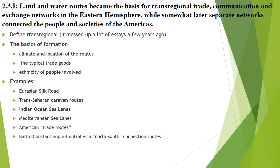The first thing we need to talk about is the basic backbone of 2.3.1, which is that land and water routes became the basis for trans-regional trade, communication, and exchange networks in the eastern hemisphere, and later on separate networks connected people and societies of the Americas.